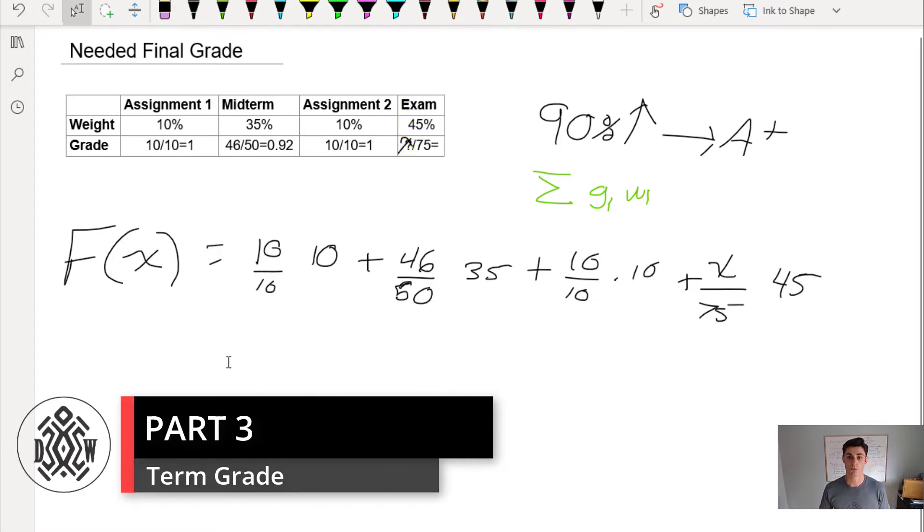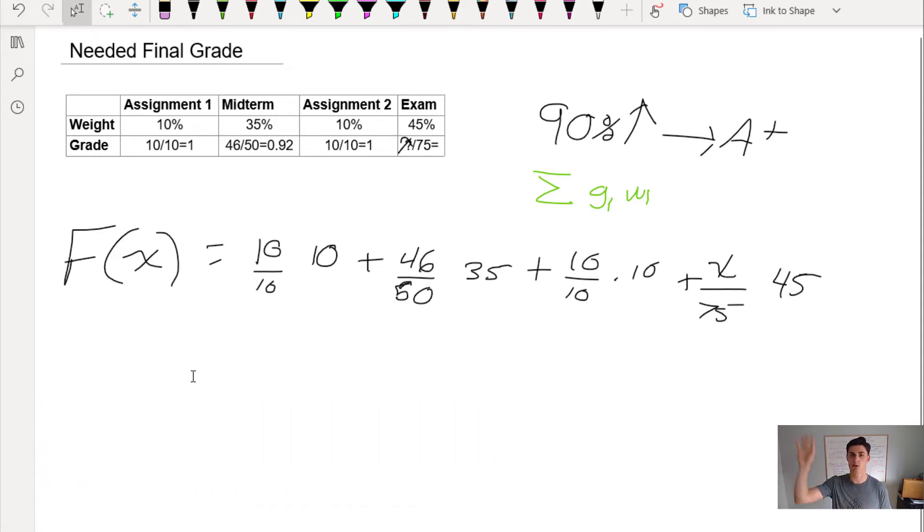What grade do I have in the course without taking the final exam? If I get zero on the final exam, the last term goes away so I have 10 plus 0.92 times 35 plus 10. That equals 52.2 percent. So my final grade if I get zero is 52.2 percent, which makes sense given I got 52.2 out of 55 points.